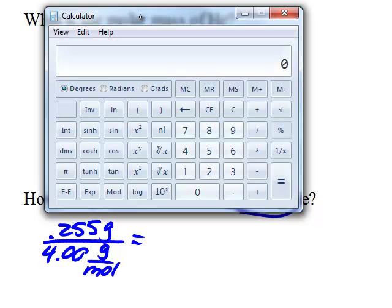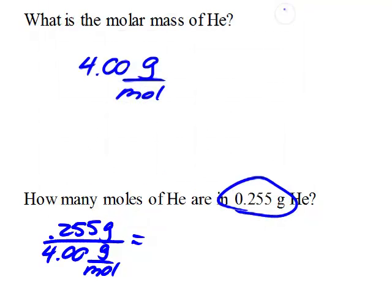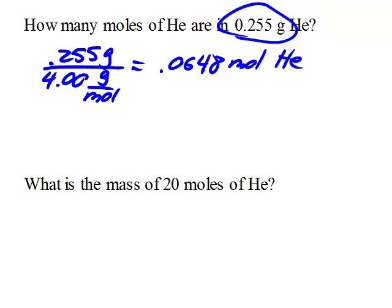Pop up the calculator. 0.255 divided by 4.00 gives us 0.0648 moles of helium.